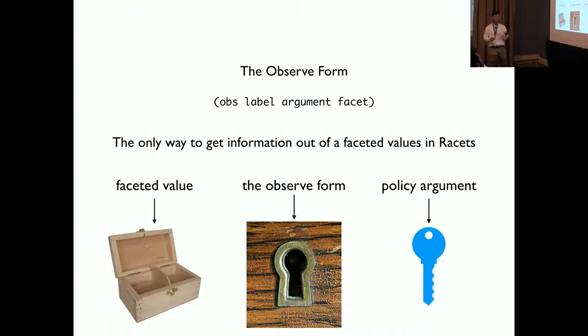We also have an observe form in RACIS. What is observe form? It basically is the only way you can get information out of the facet value in RACIS. A good analogy is that a facet value is like a box with two compartments. And the observe form is like a keyhole that can open one of the compartments, but not both.